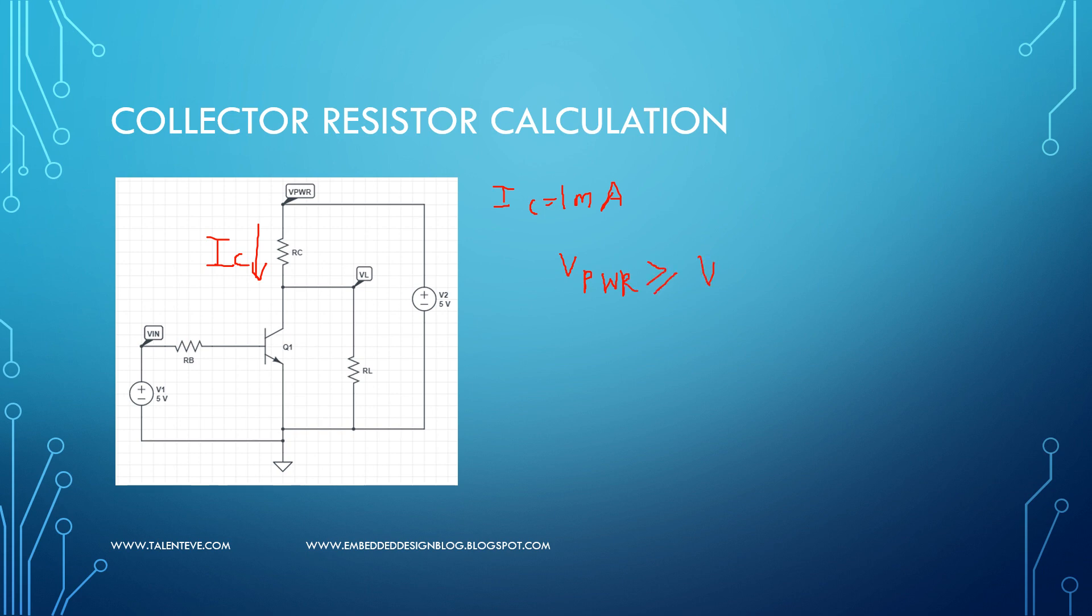So this V power should always be greater than or equal to VL plus RC into IC. So this is how you calculate the VL. So V power we know is 5 volts, must be greater than or equal to VL. So let us assume my VL needs around 4 volts, which is the requirement for this load to operate here.